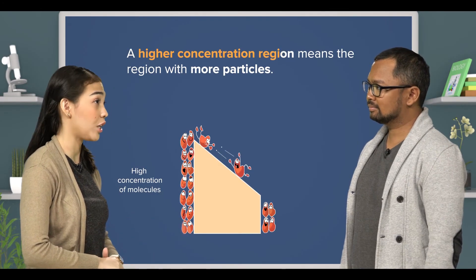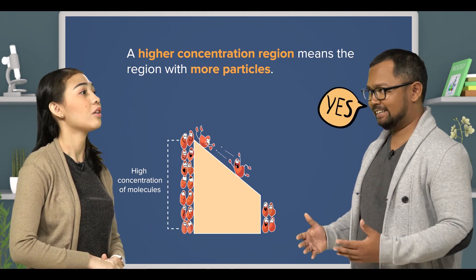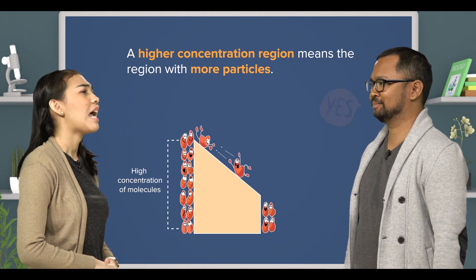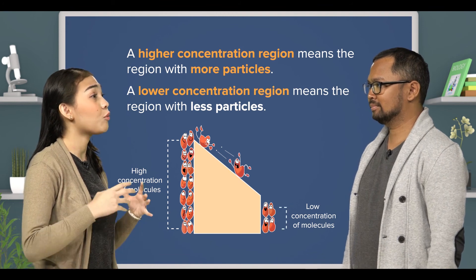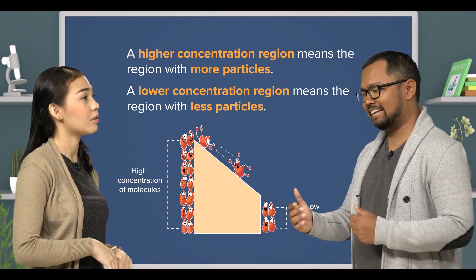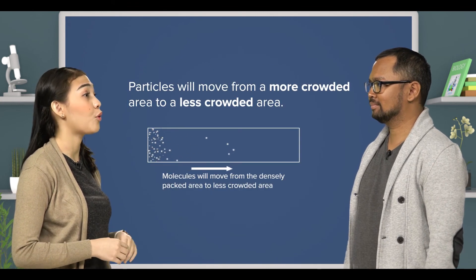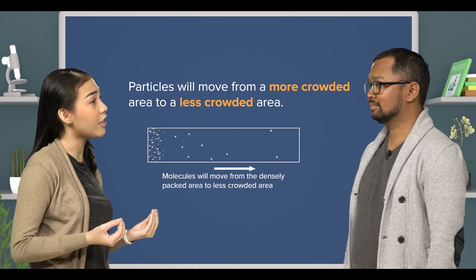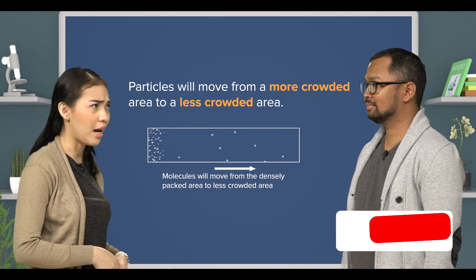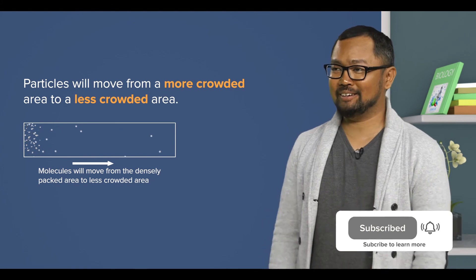So a higher concentration region means the region with more particles. Yes. And a lower concentration region means the region with fewer particles. That's right. And particles will move from a more crowded area to a less crowded area. Am I right? Yes, that is absolutely right.